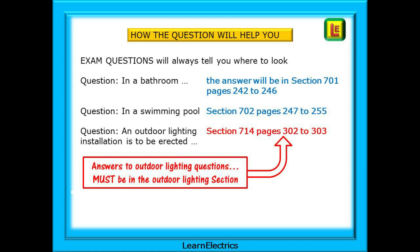The questions on part 7 will always help you to find the answer. They will always tell you where to look, more so than questions on other parts of the regulations. If a question starts with 'in a bathroom,' then guess where the answer will be. It will be in section 701, rooms containing a bath or shower, on pages 242 to 246. You don't need to look anywhere else for the answer, just these 5 pages. How easy is that?